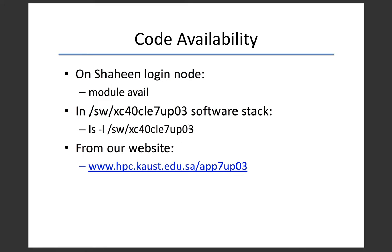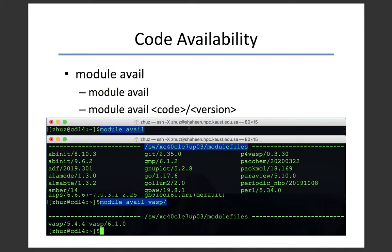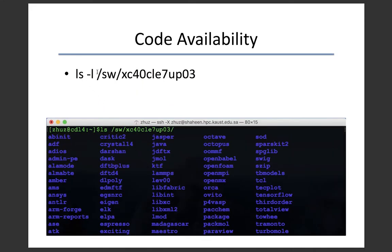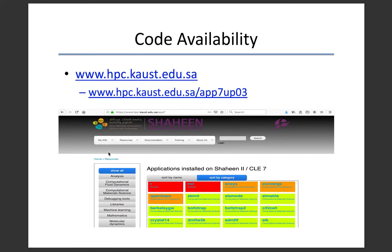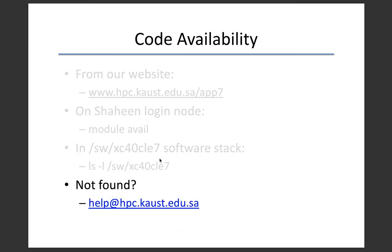There are three ways to check code availability. The first is to use the module avail command. If you type module avail on the login node, you will see a full list of software, compilers, and libraries available on Shaheen. From a specific part of the output, you will see a list of software maintained by the CS team at KSL. If you do module avail followed by the name of the software, you will find information specific to that software. You can also do ls over the software folder to see the software stack directly. You can also check our website, which shows all software available on Shaheen. If you can't find the software or the version you need, just send us an email at the listed address and we will install it for you.